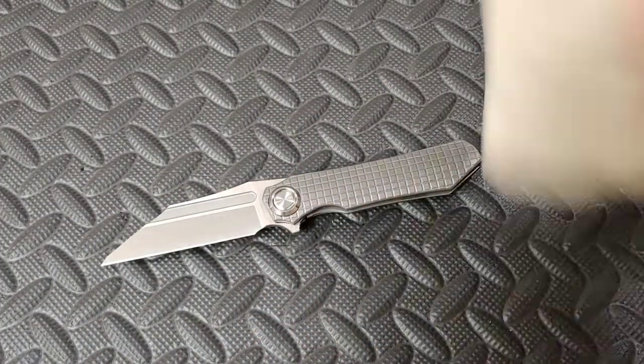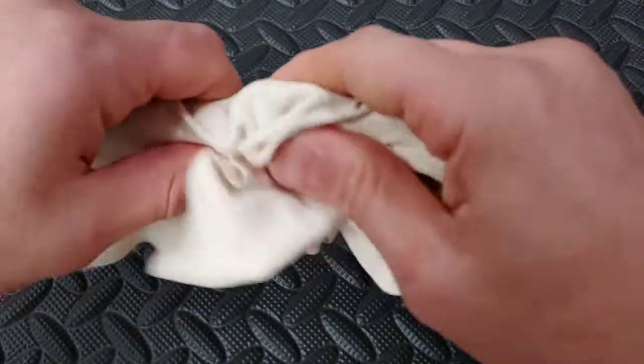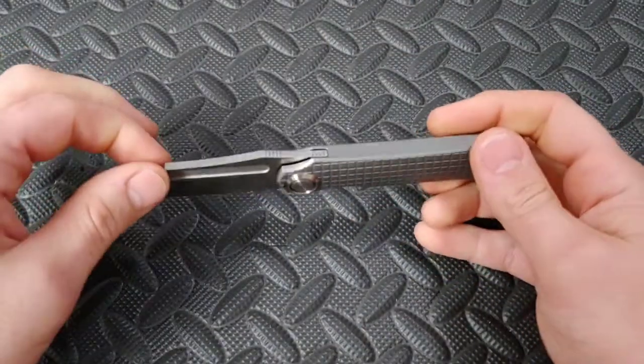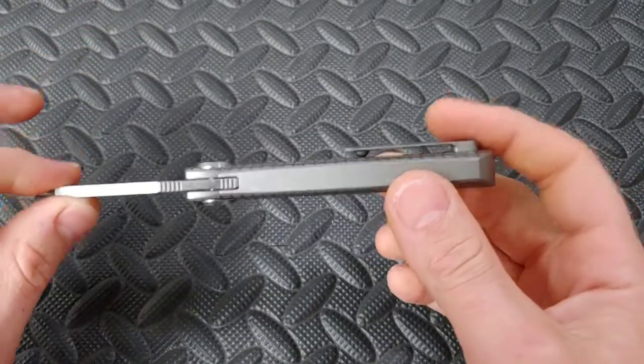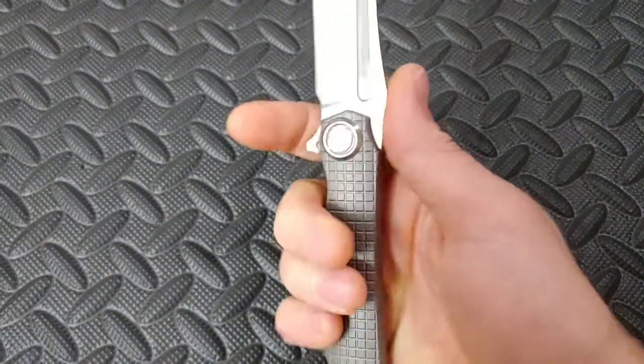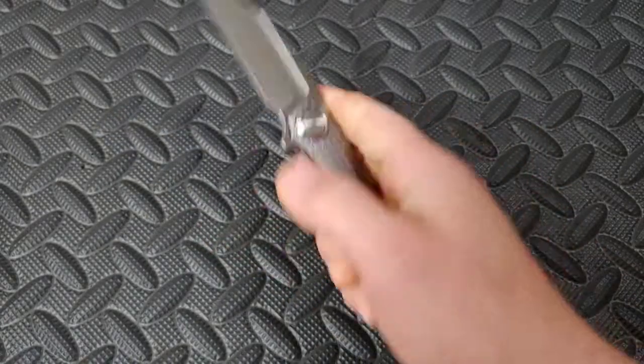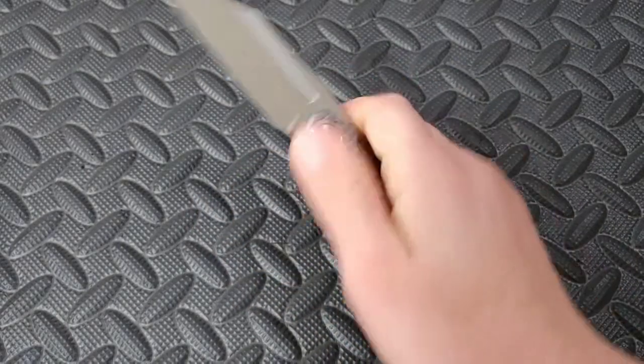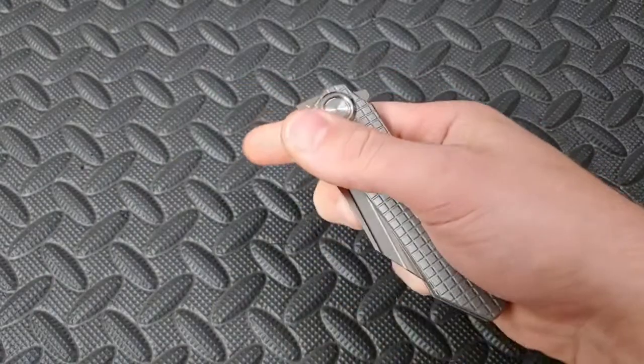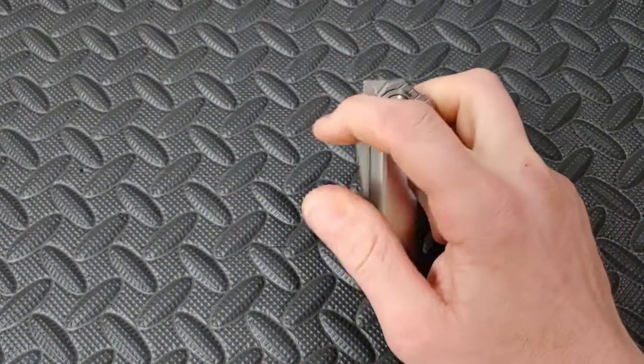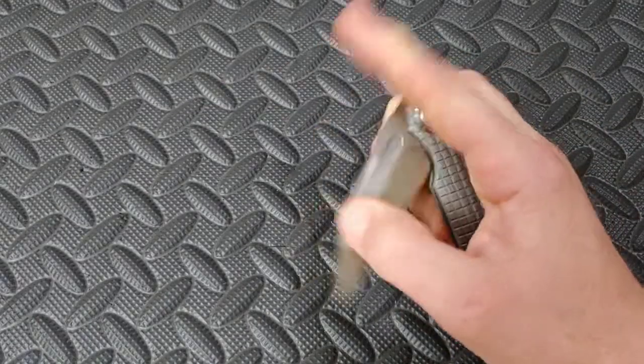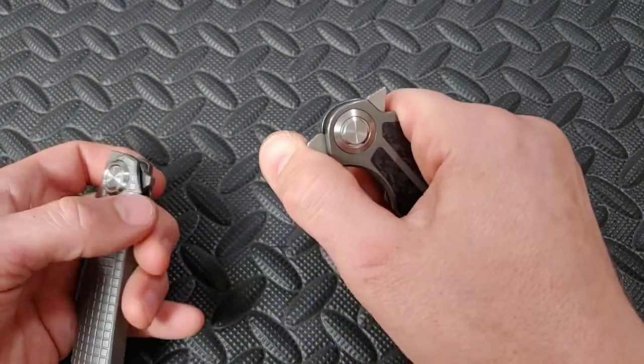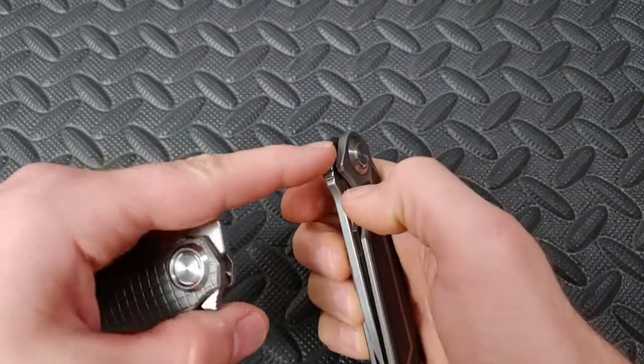This has the grenade pattern, I think it's called. It's an integral with a great looking clip. Look at that finger choil - this thing is comfy. My god, is TwoSun killing it. It's a front flipper, let's see how that works. Works really good. Middle finger flick - bang! This thing is awesome. It has a flipper on the back, but if you look at it, the flipper tab is a little bit big so it can get you right here.